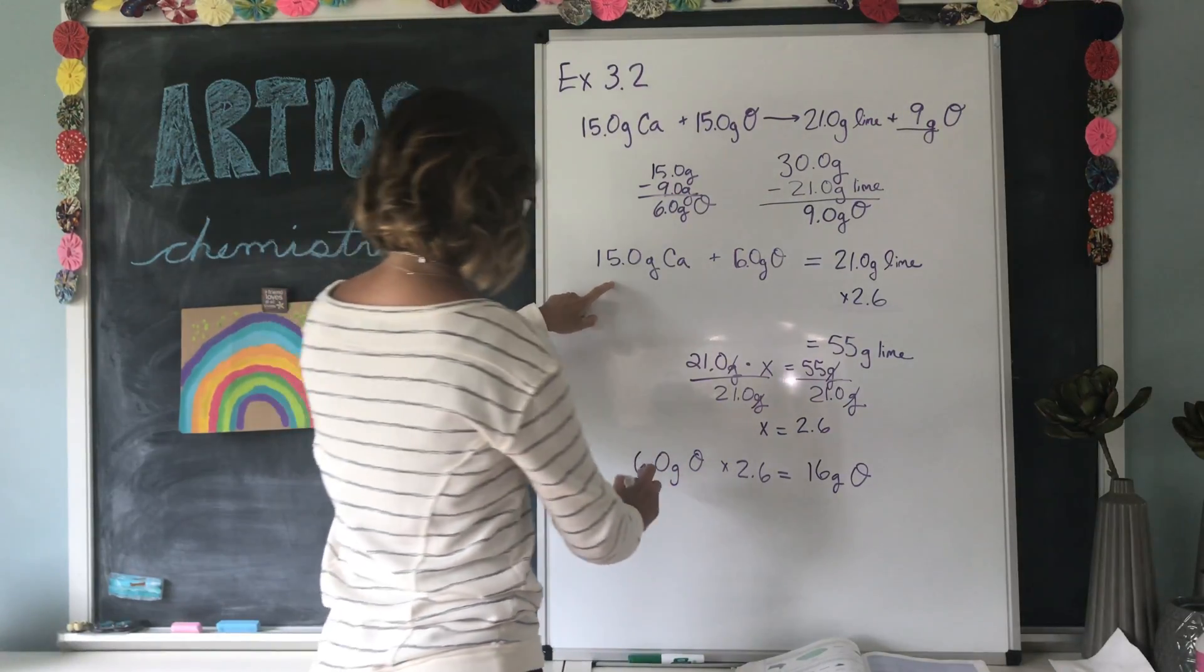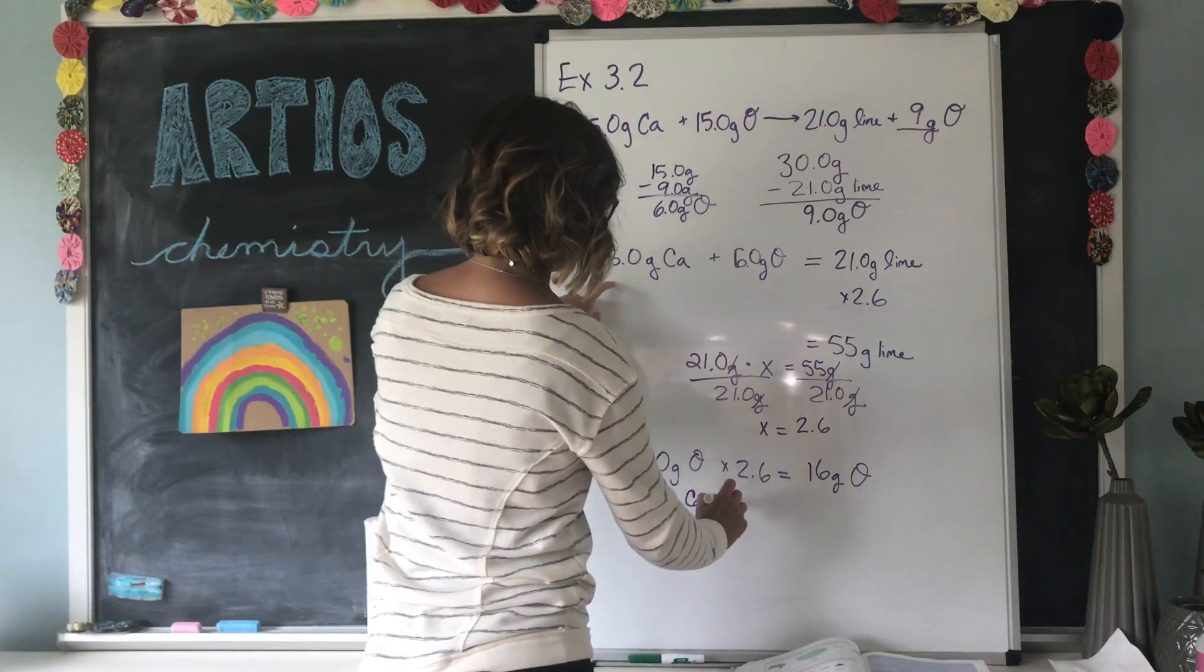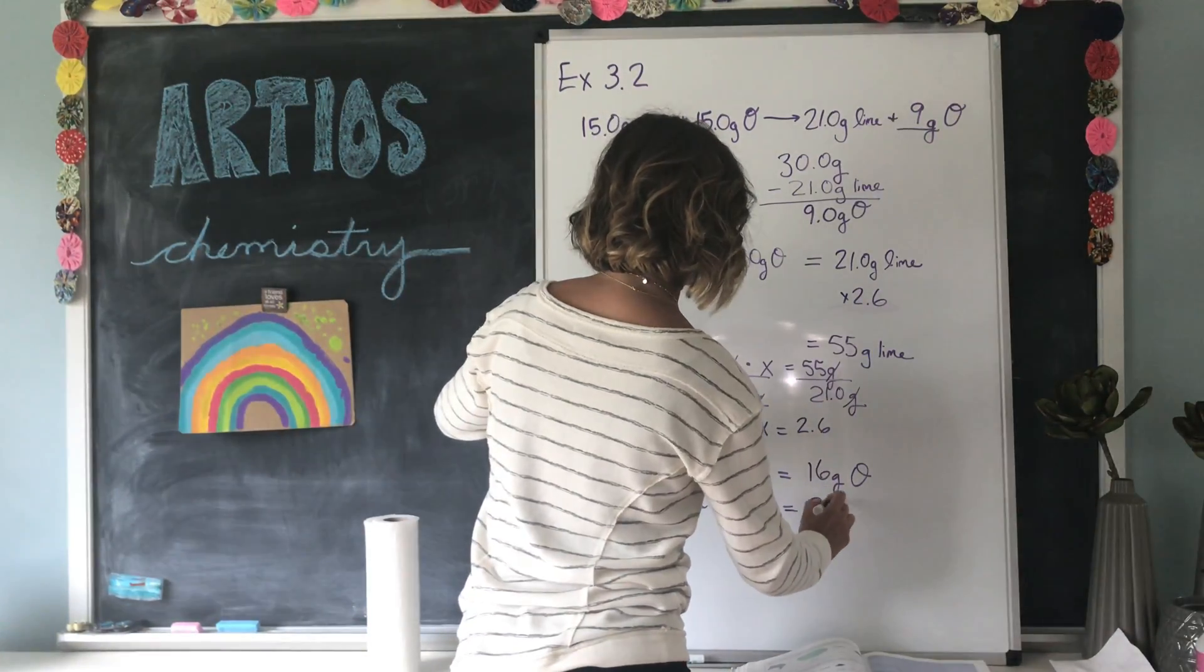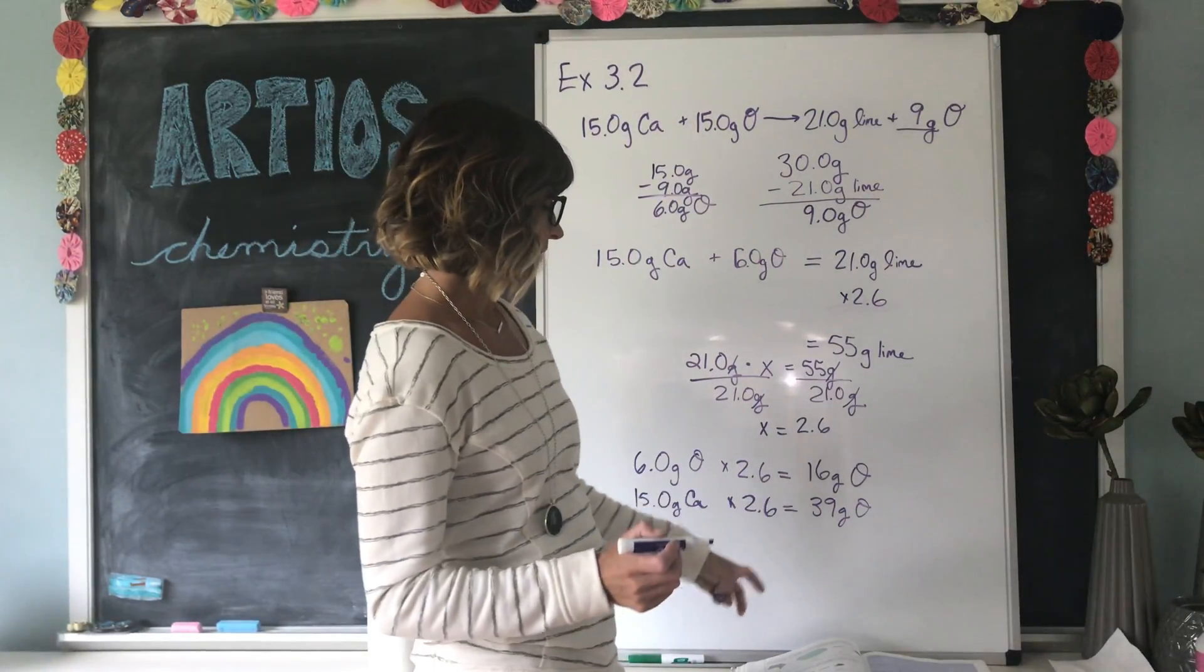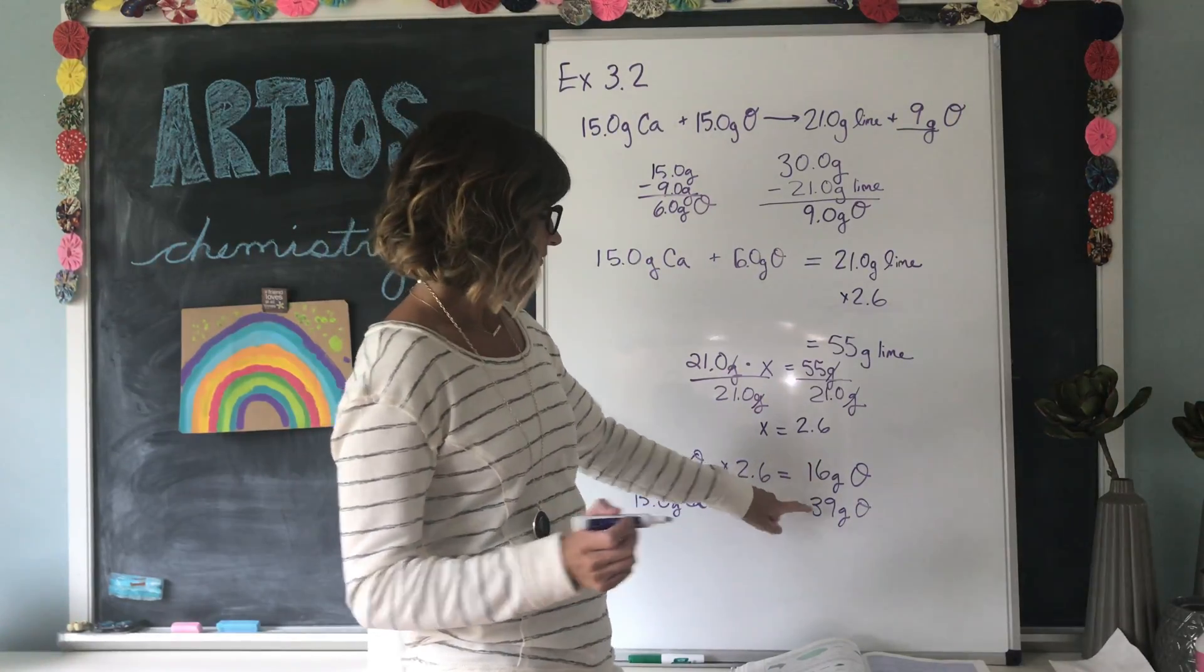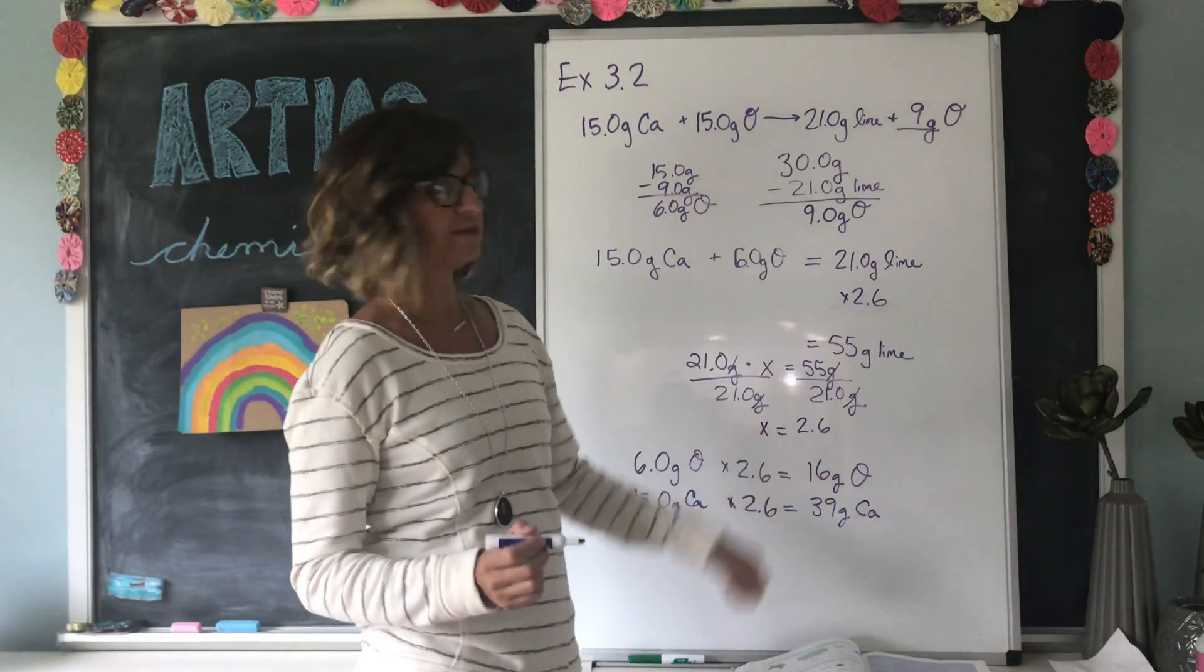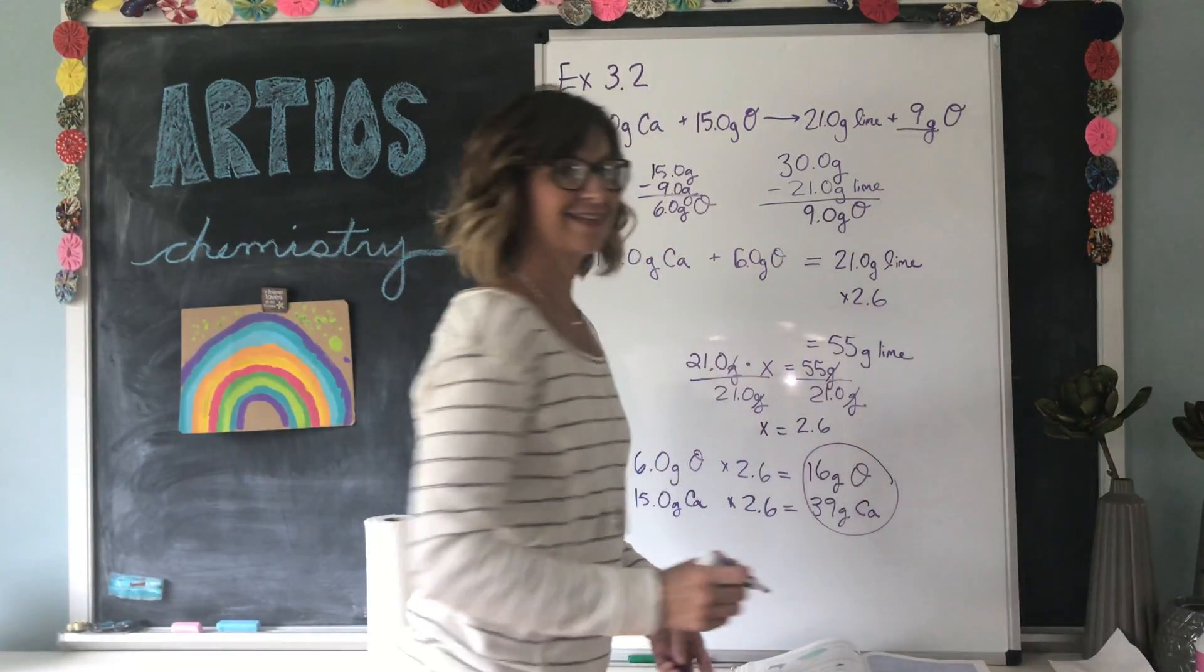And then for calcium, instead of needing 15 grams of calcium, we multiply it by our factor of 2.6, and we end up with 39 grams of calcium. So, in other words, if you have 16 grams of oxygen and react it with 39 grams of calcium, you can create 55 grams of lime, which is what the question was asking.